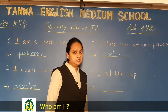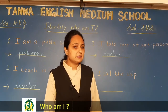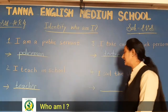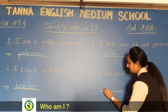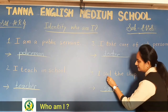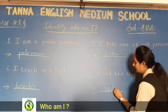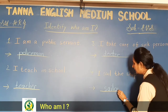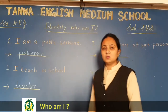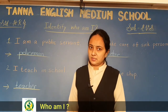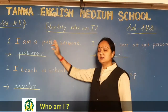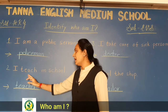Fourth one: 'I sail the ship.' Who sails a ship on water? A sailor. Write the spelling: s-a-i-l-o-r. Just remember the ending is o-r. So the answer is sailor.